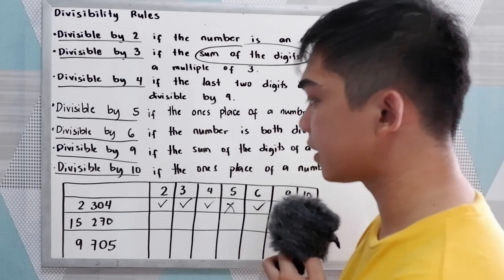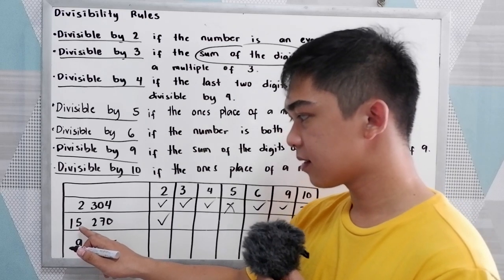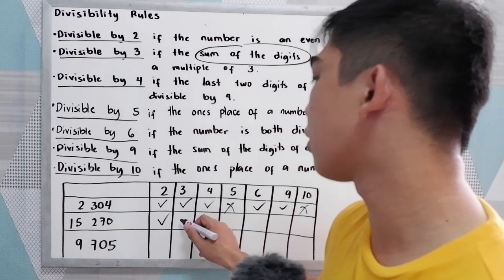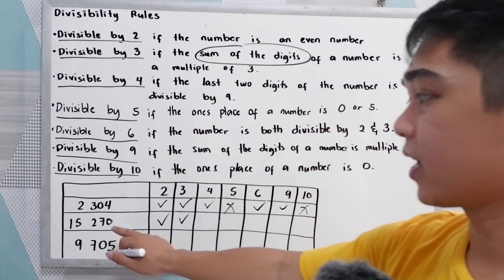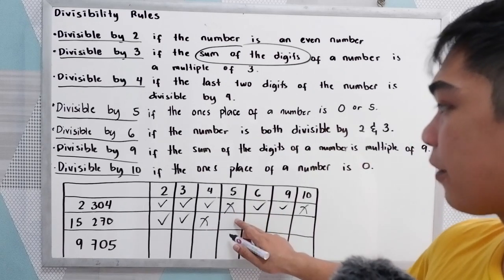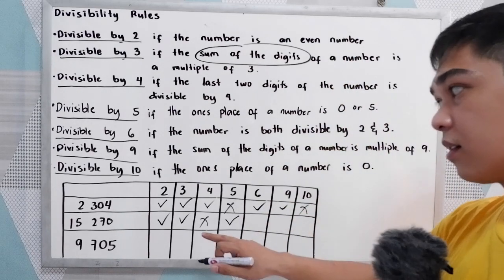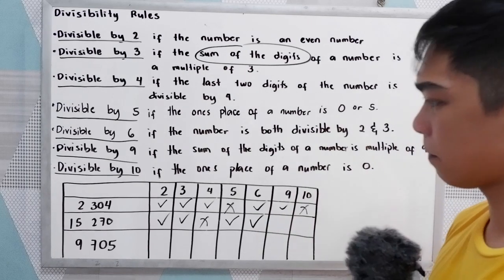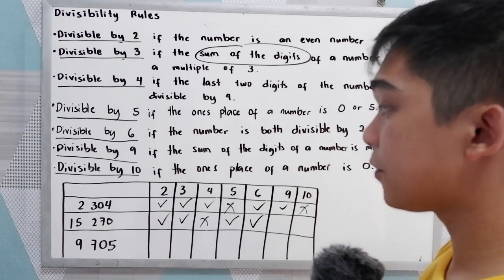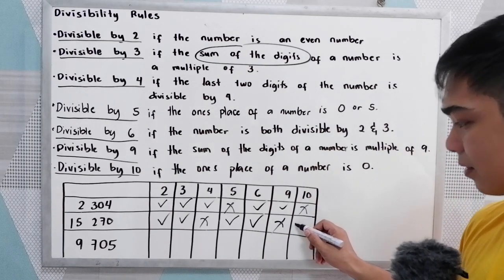Second number is 15,270. It is divisible by 2. For divisibility by 3, the digit sum is 1 plus 5 plus 2 plus 7 plus 0, which equals 15 — a multiple of 3, so yes. The last two digits are 70, and 70 is not divisible by 4, so no. It ends with 0, so it is divisible by 5. It is divisible by both 2 and 3, so it is divisible by 6. The digit sum is 15, which is not a multiple of 9, so no. It ends with 0, so it is divisible by 10.